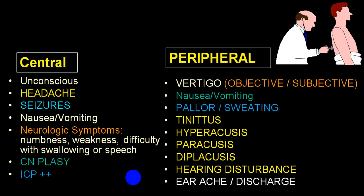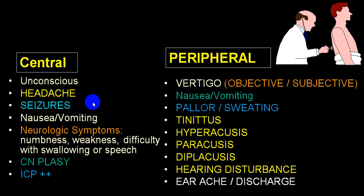For peripheral vertigo: the classical three groups are acute labyrinthitis, BPPV, and Meniere's — these top the list, followed by vestibular neuritis. From history, nausea and vomiting are present; there may be prostration, tinnitus, hyperacusis, paracusis, hearing disturbance, otalgia, and ear discharge. This is easy to differentiate from central vertigo: tinnitus, hyperacusis, nausea and vomiting are present, but no symptoms or signs of neurological damage, no seizures, no headache, no altered level of consciousness.